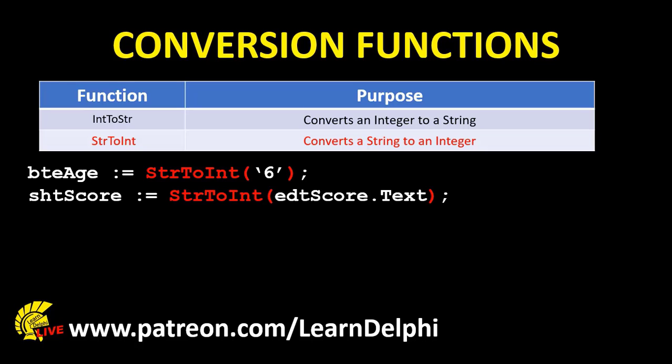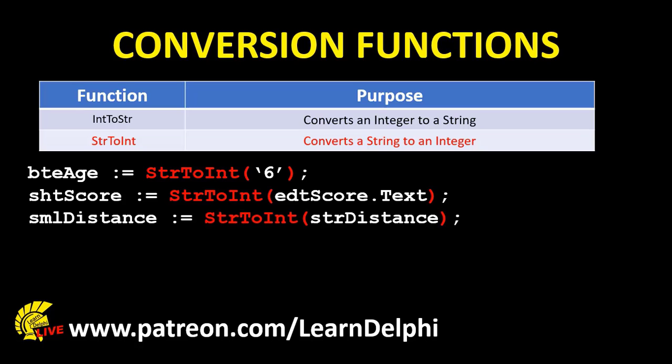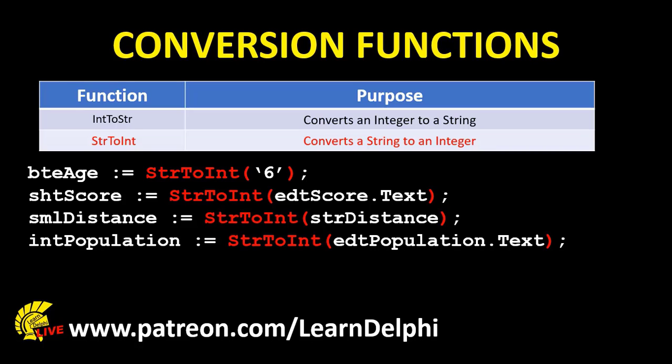This statement does the same, but in this case the number comes from the text property of an edit called 'edt_score'. The text property of an edit is a string, so we must first convert the text to an integer type before we can assign it to a short int variable. This example converts a number saved in a string variable to an integer before assigning it to the small int named 'sml_distance'. And this one converts the text in an edit before assigning it to the integer variable named 'int_population'.